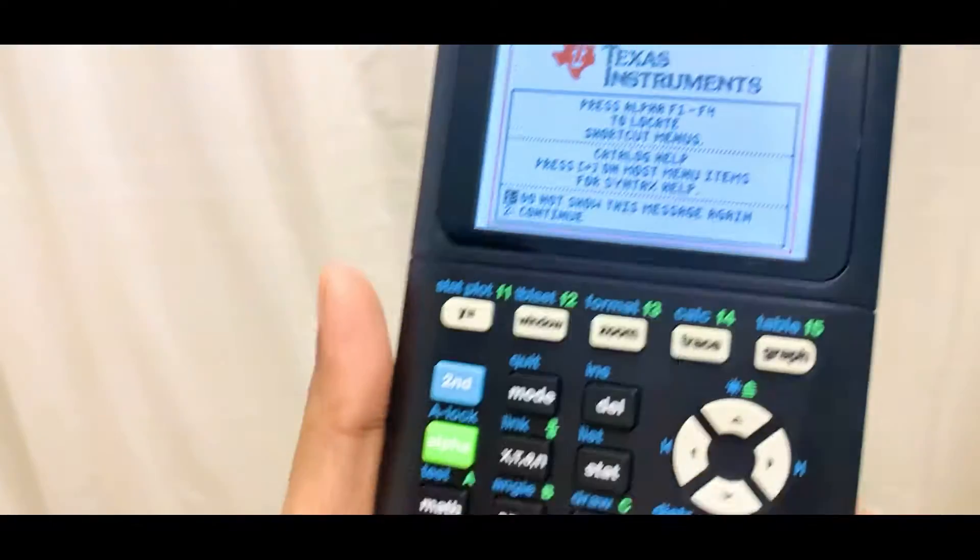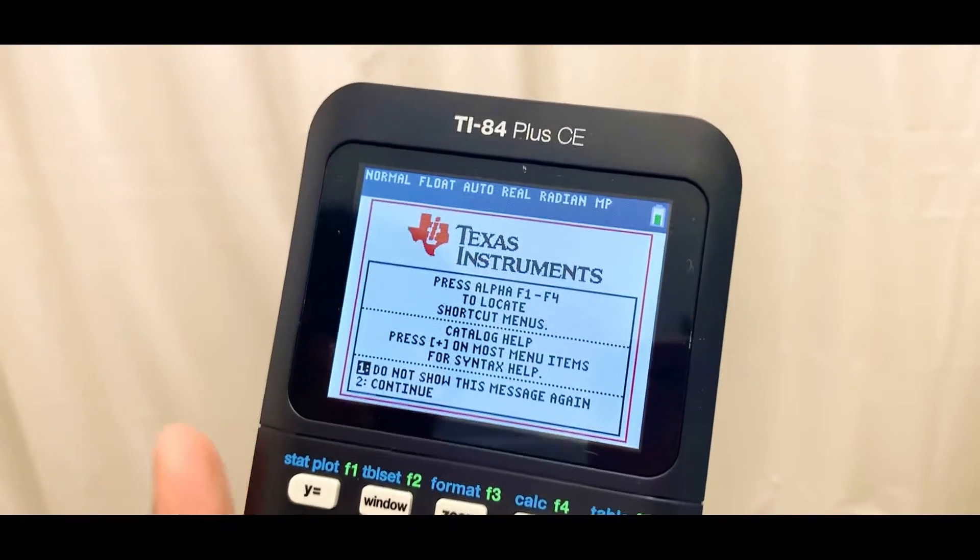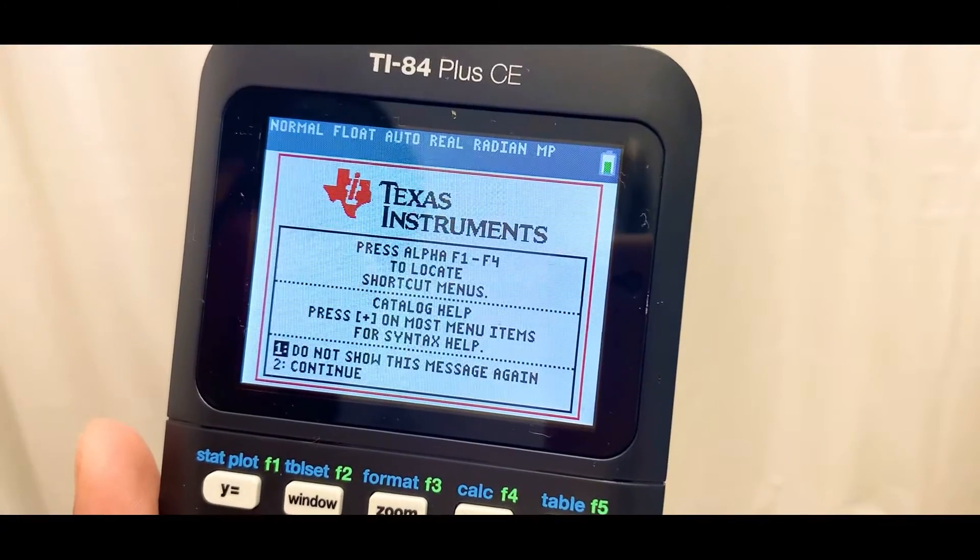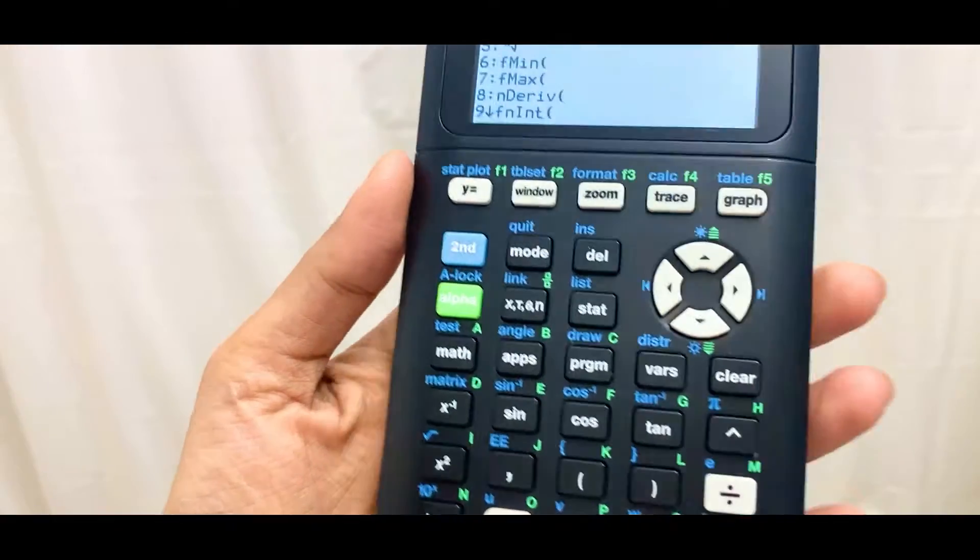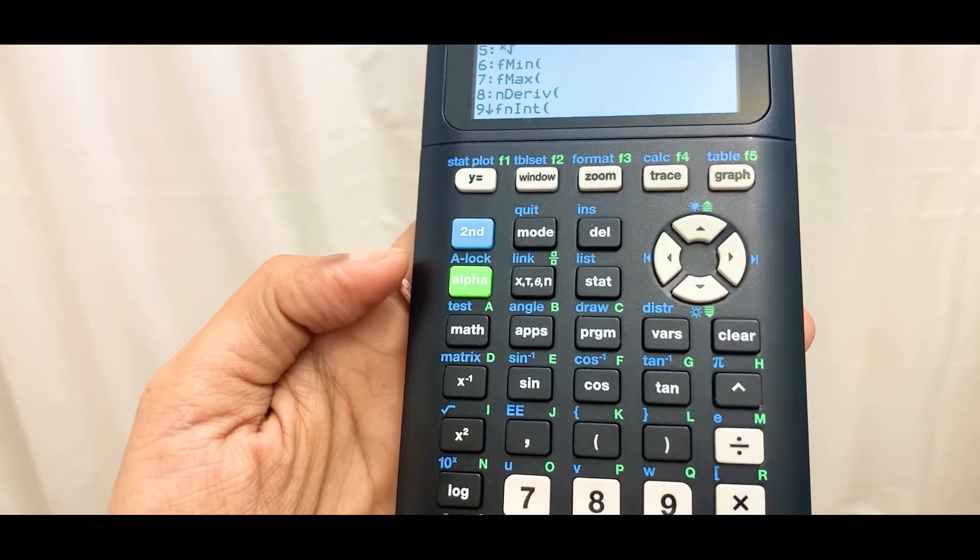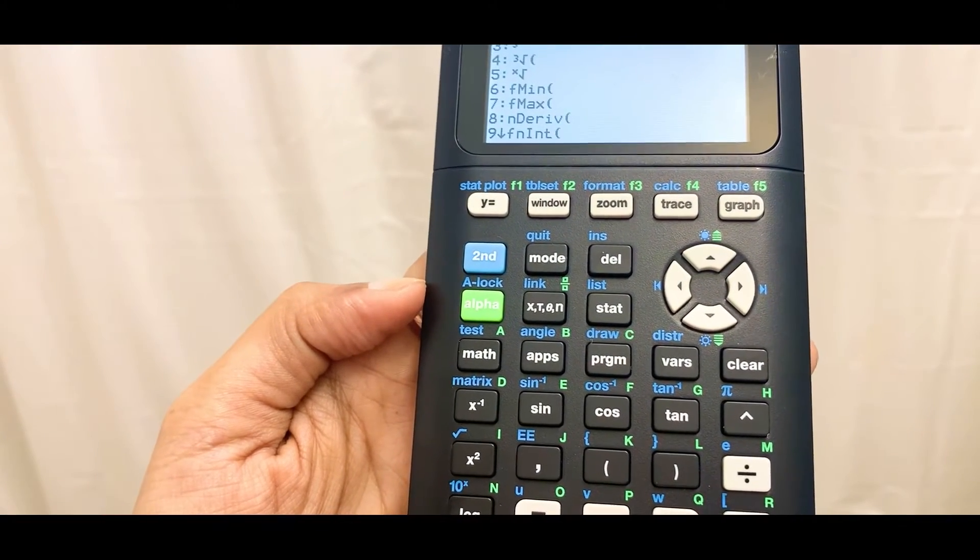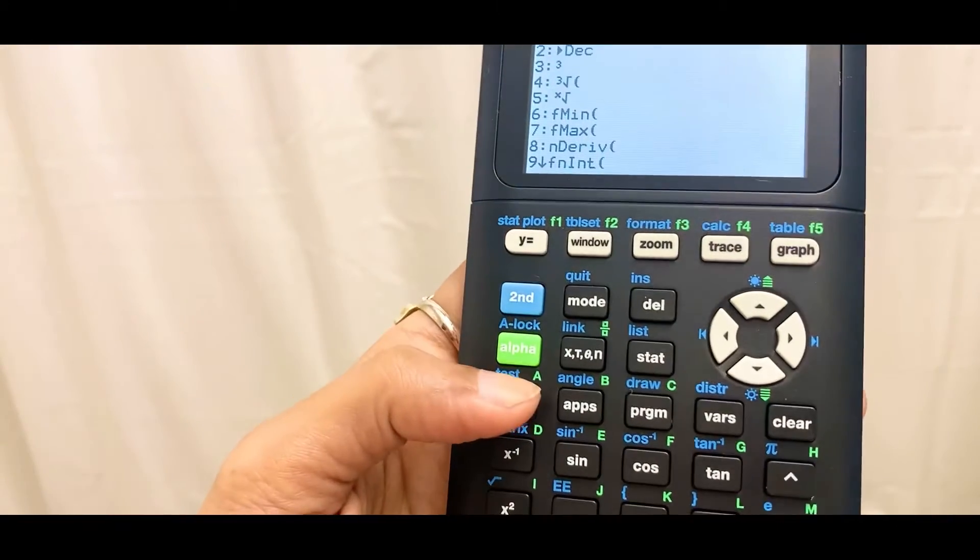...resolution. This is the on button. This is high resolution with a full-color backlit display. The good thing about this calculator is that it has pre-loaded apps and images and 14 interactive zoom features.